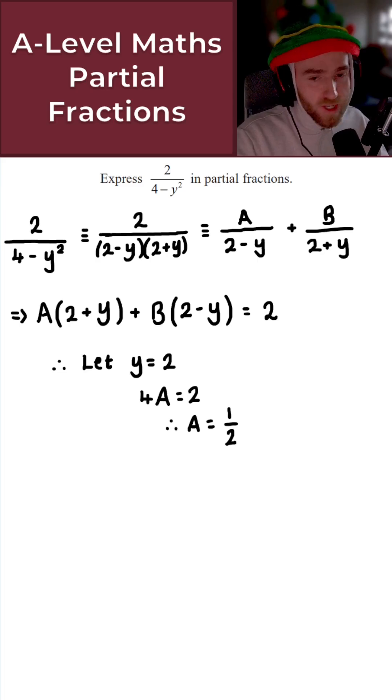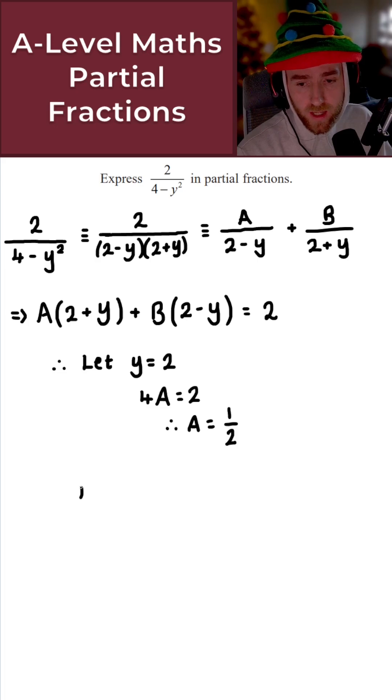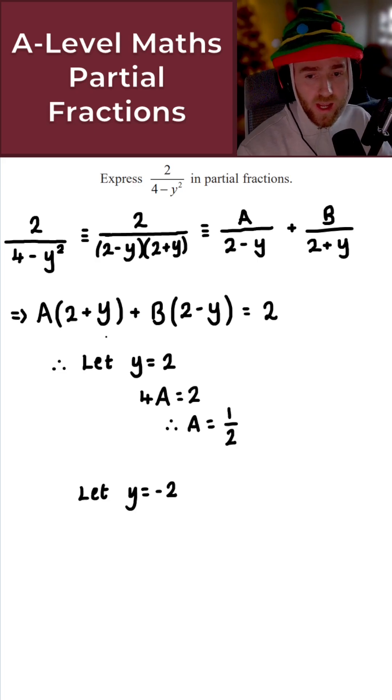My Christmas tree has just gone out in the background. It looks really dark. Let me fix that. In a similar fashion, if we let y equal minus 2, what I get here is 2 plus minus 2, which is just the same as 0. So A times 0 is 0. We've eliminated A and we can solve for B.